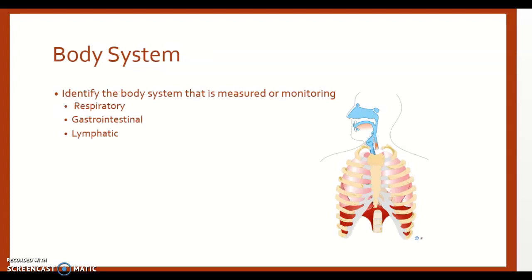Our fourth character is the body system. When coding this, you want to think about what body system is being measured or monitored — was it the respiratory, the gastrointestinal, the lymphatic? Where exactly is the measurement or monitoring occurring?